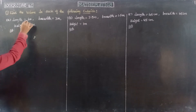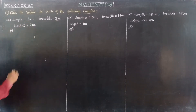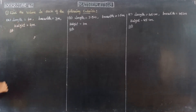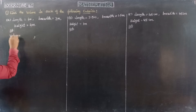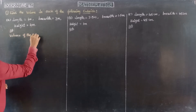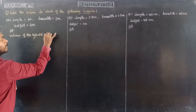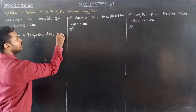So, length of the cuboid 6 meter, breadth of the cuboid 3 meter, and height of the cuboid 4 meter. The given measurements are length, breadth, and height of the cuboid. So, we are going to find out the value of the cuboid. The formula to find the value of the cuboid. Value of the cuboid is equal to length into breadth into height, in cubic units.